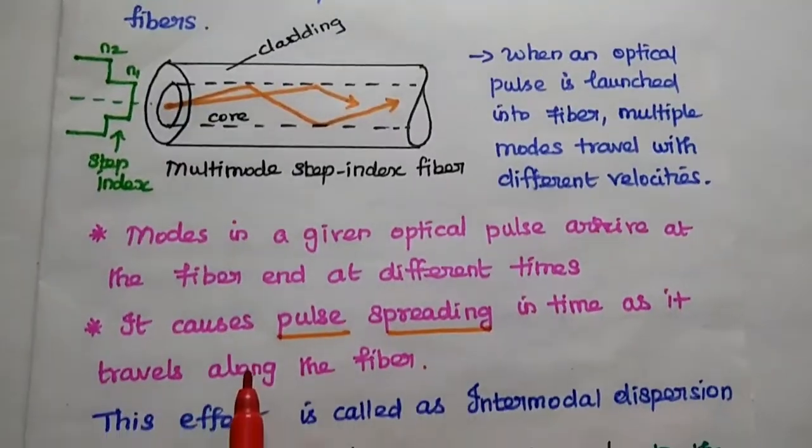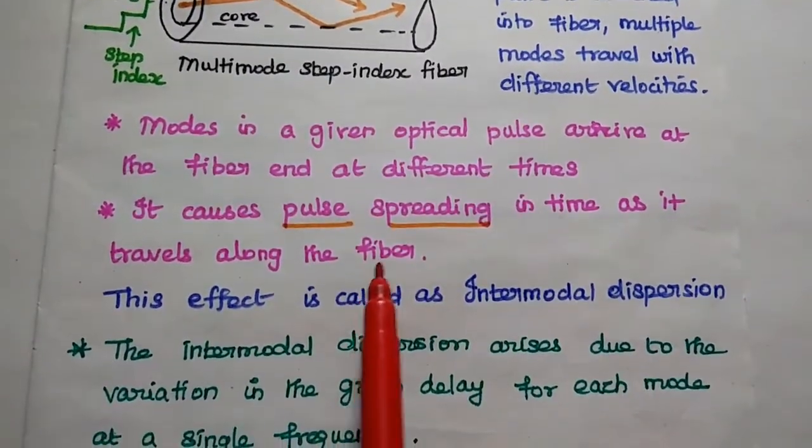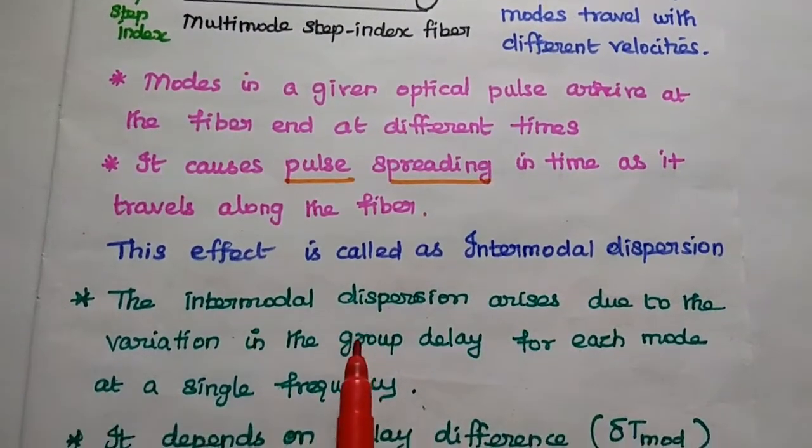Right, so here it causes pulse spreading in time as it travels along the fiber. So this effect is called intermodal dispersion.